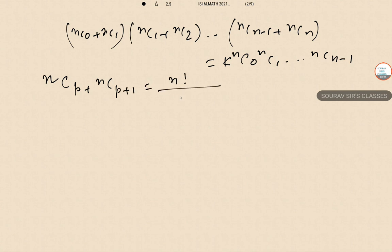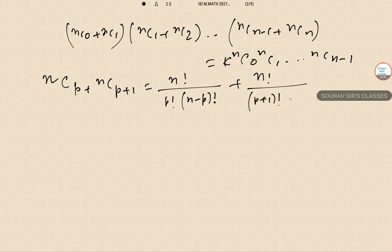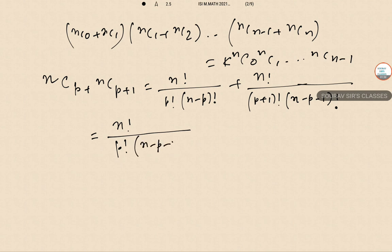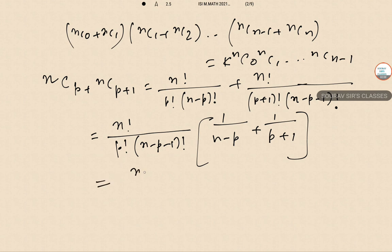Factoring out n factorial, p factorial, and (n-p-1) factorial as common terms, we get n factorial times (1/(n-p) + 1/(p+1)). Solving this gives (n+1) factorial divided by (p+1) factorial times (n-p) factorial. So nCp plus nC(p+1) equals (n+1)C(p+1).